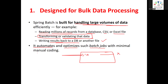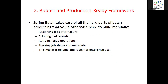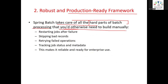After reading and transforming, we write back to a database or another file. Spring Batch automates and optimizes batch jobs with minimum manual coding. This entire process can be called a job. Now, the second reason: Spring Batch is a robust and production-ready framework — it takes care of all the hard parts of batch processing that you would otherwise need to build manually.